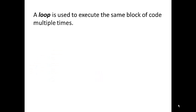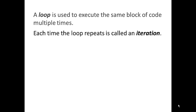Hi, I'm Joe and today we're going to talk about for loops in Python. A loop is used to execute the same block of code multiple times. Each time the loop repeats is called an iteration of the loop.